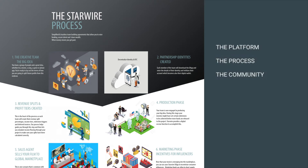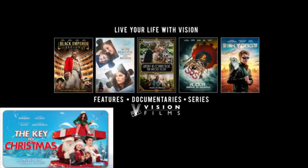Starwire is a platform where teams can create their own smart contracts to share revenue from their creative projects. My name is Garnet. I produce films, and The Key to Christmas is one of our projects coming out this November. We were able to bring aboard investors during post-production using an alpha version of the Starwire software.